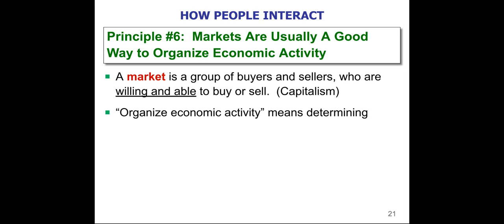Buyers and sellers, through a system of trial and error, decide what goods to produce. People can start a business and come up with an idea, but that doesn't necessarily mean buyers are going to want it. You could come up with a great idea and then nobody wants to buy it and you go bankrupt. Anyone who has ever seen the TV show Shark Tank has seen some really bad ideas.